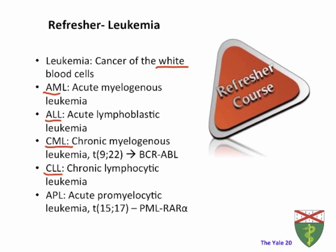AML stands for acute myelogenous leukemia — leukemia of your myelogenous cells, for example your neutrophils. ALL is acute lymphoblastic leukemia, so lymphocytes. CML is chronic myelogenous leukemia, probably most known to all of you because of USMLE questions involving the translocation between chromosomes 9 and 22, the BCR-ABL fusion gene. CLL stands for chronic lymphocytic leukemia.